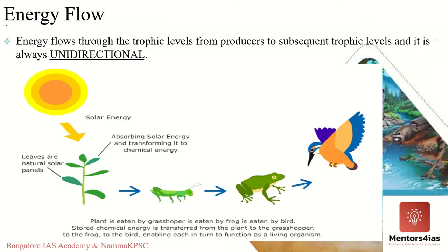When discussing energy flow within an ecosystem, always remember that energy flow in the ecosystem is always unidirectional, meaning energy will always flow in a single direction. Whenever you take any ecosystem, the energy will always come from the sun.